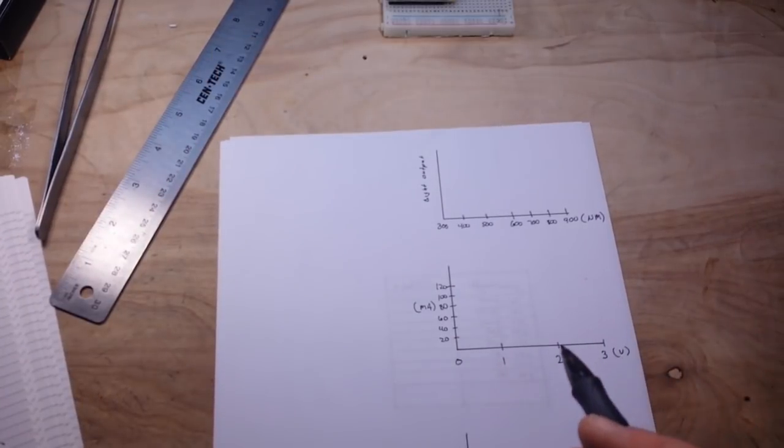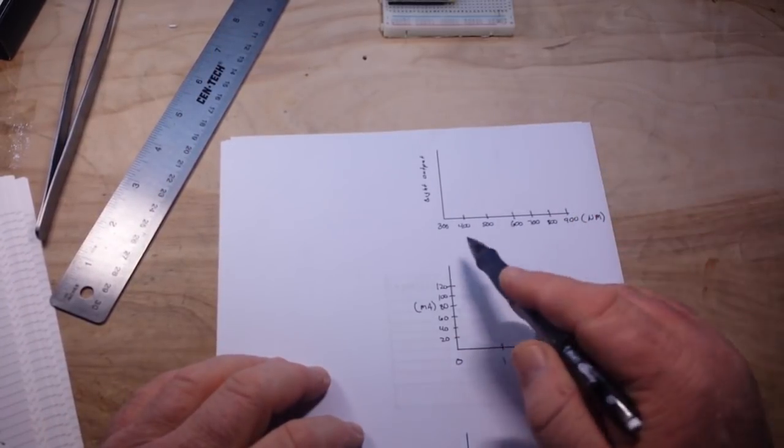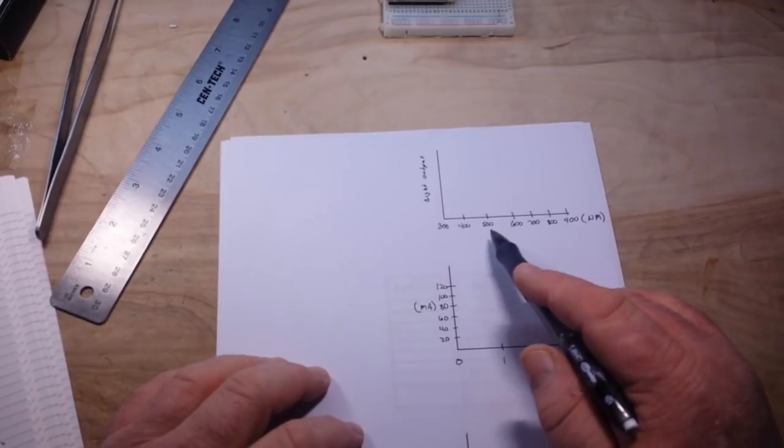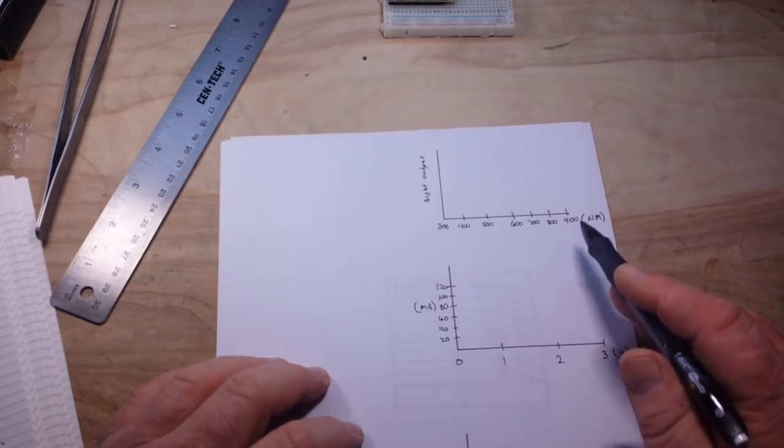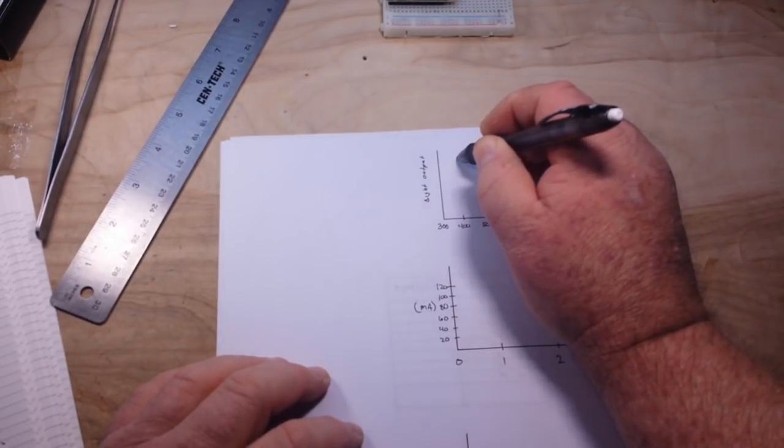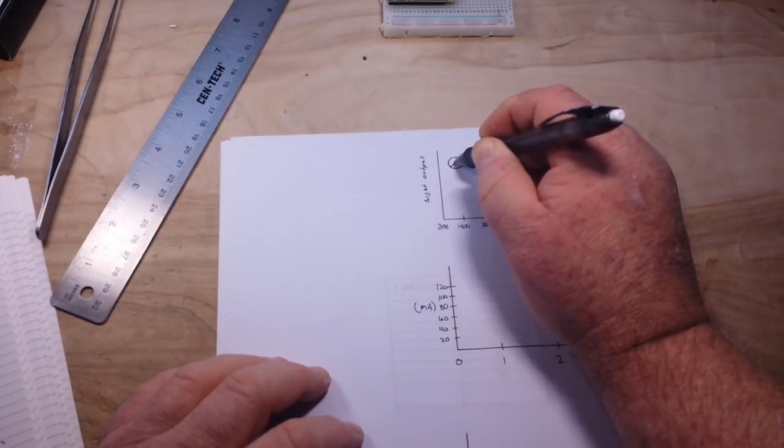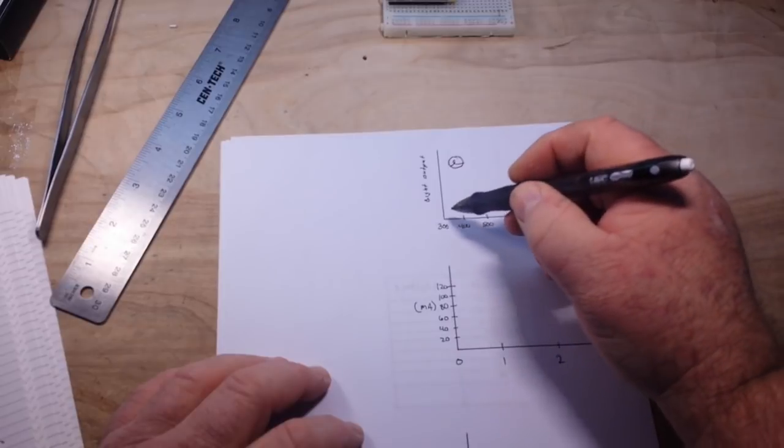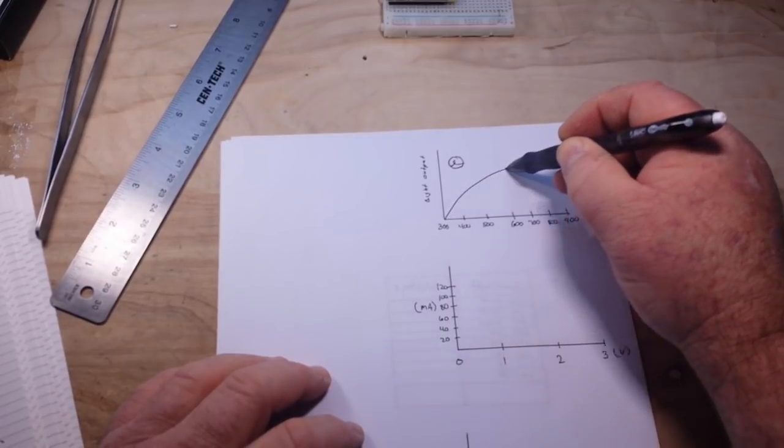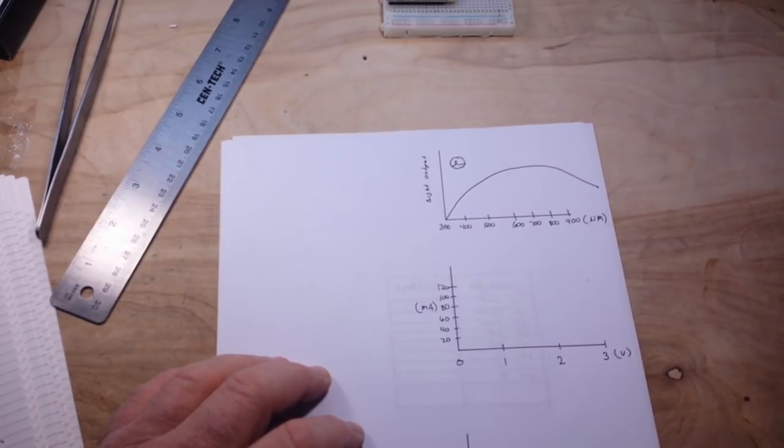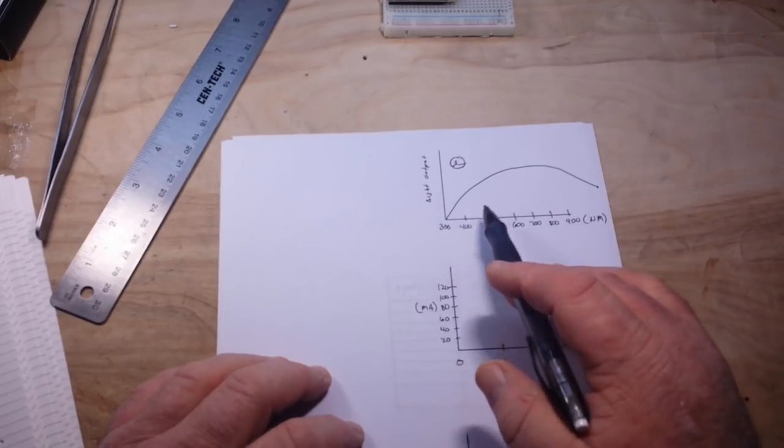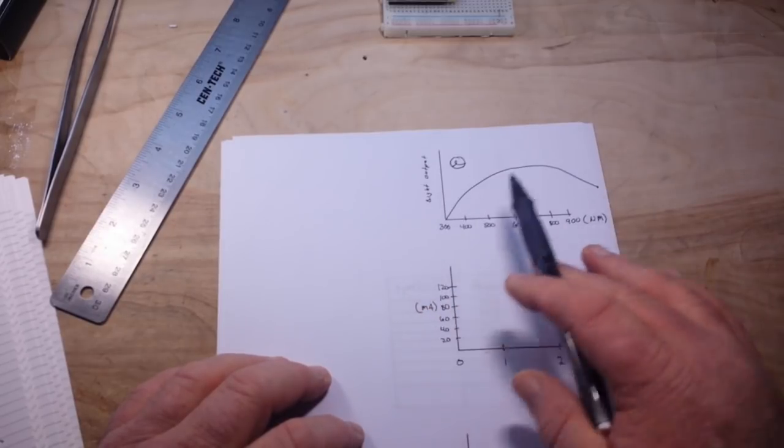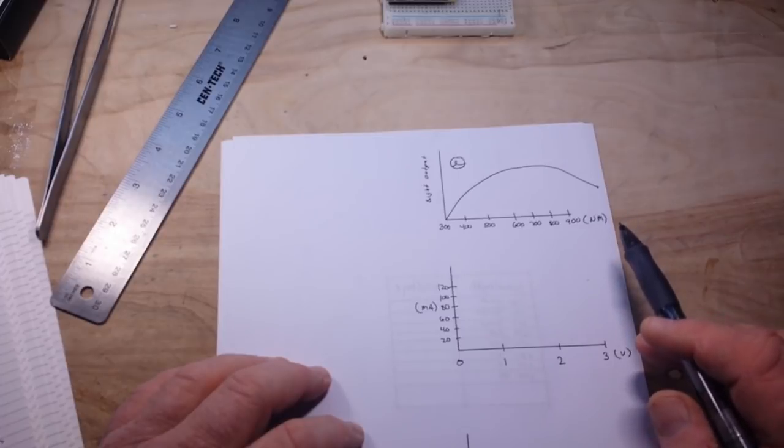So let's start up here with light output. This is nanometers. This is the wavelength of the light. And if we talk about an incandescent bulb, then we're going to see a curve something like that. So the incandescent bulb is going to output light in all these ranges.